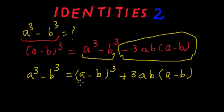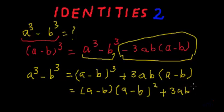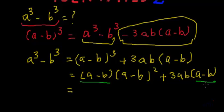Now let's see this carefully. This a minus b whole cube is actually a minus b multiplied by itself three times, that means a minus b multiplied by a minus b whole square. And then we have plus 3ab multiplied by a minus b. In both the terms, we have a minus b in multiplication.